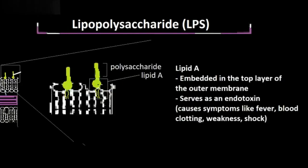LPS functions to provide extra rigidity to the cell wall of the gram-negative bacteria. LPS has three parts: the lipid A portion, the core polysaccharide, and the O antigen. Let's start by first talking about the lipid A portion.